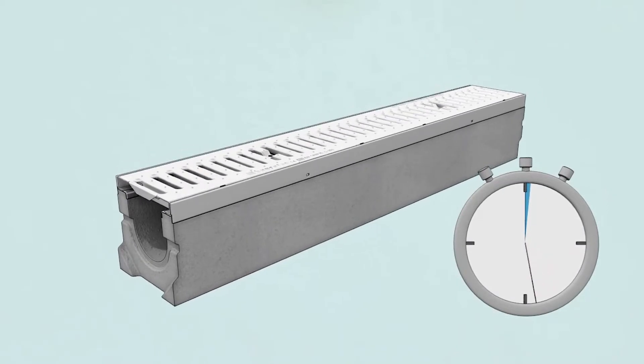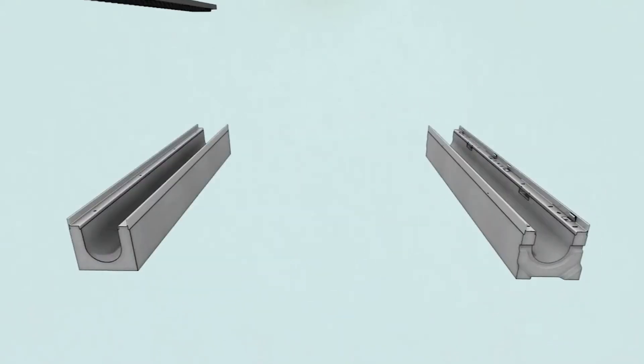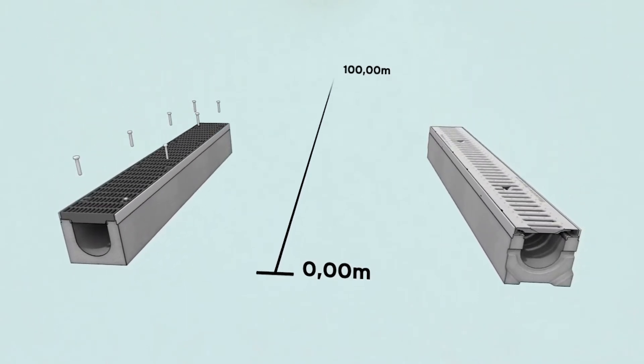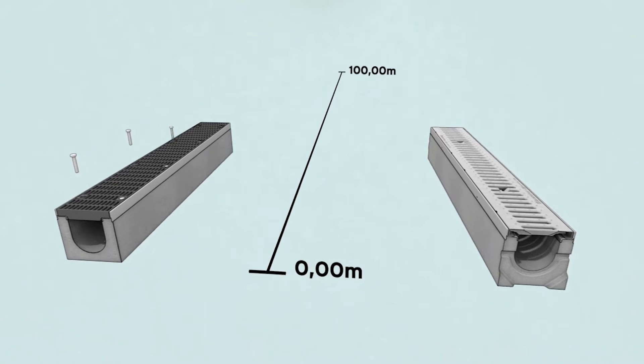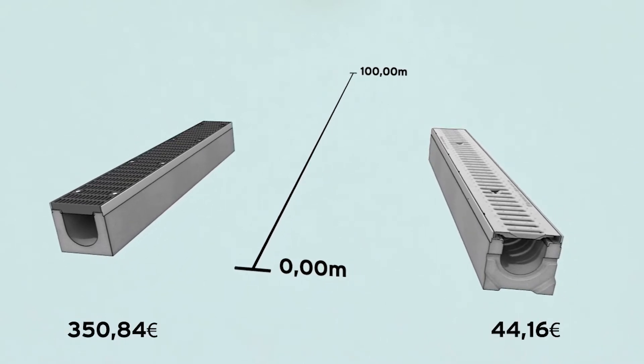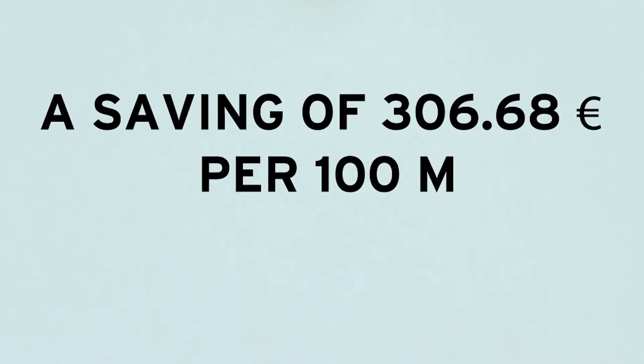For example, if we lay one hundred meters of channel, we save over seven hours of work. That reduces costs, which is good for everybody. The boss saves money and we get the job done quickly. No surprise then that over seven million meters have been installed with side lock up to now.